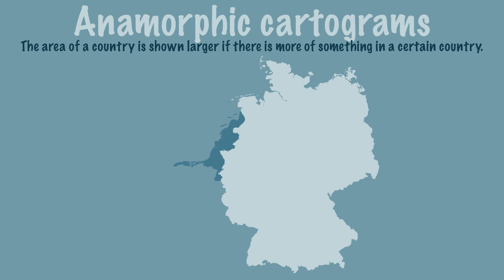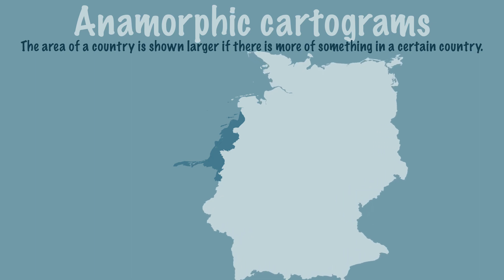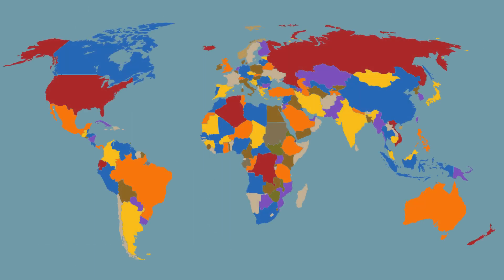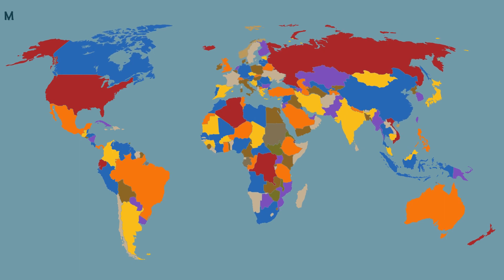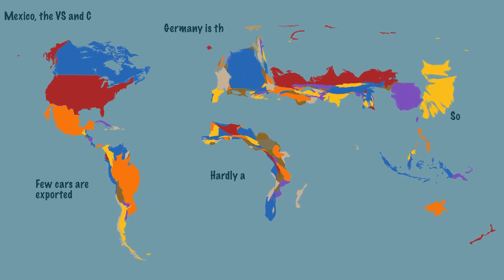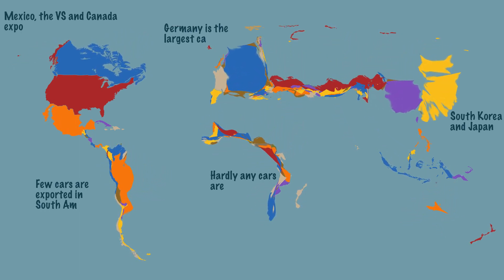Germany is depicted large because many cars are produced there. This type of map is also known as a cartogram. When we make such maps for the whole world, it is striking that some areas are very large while other areas are very small.